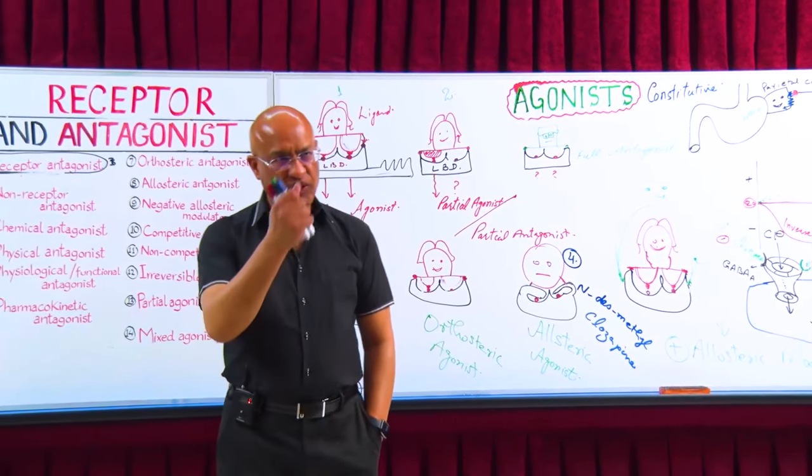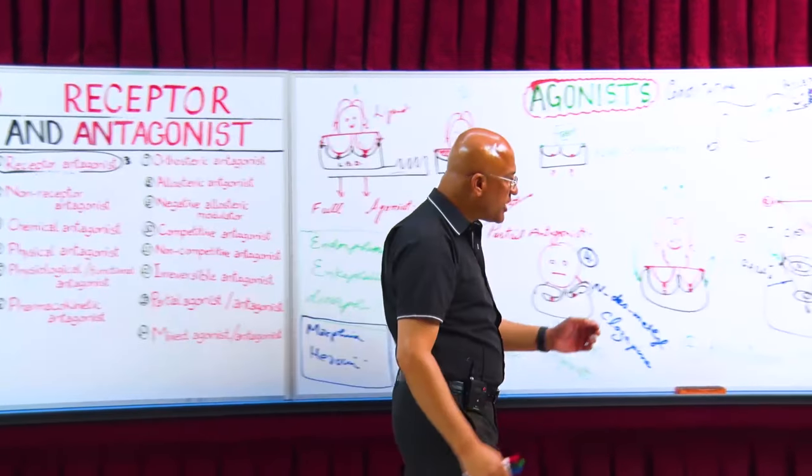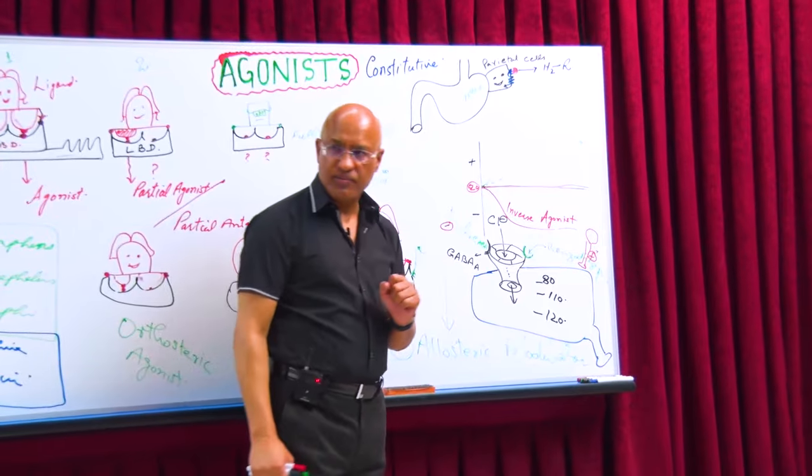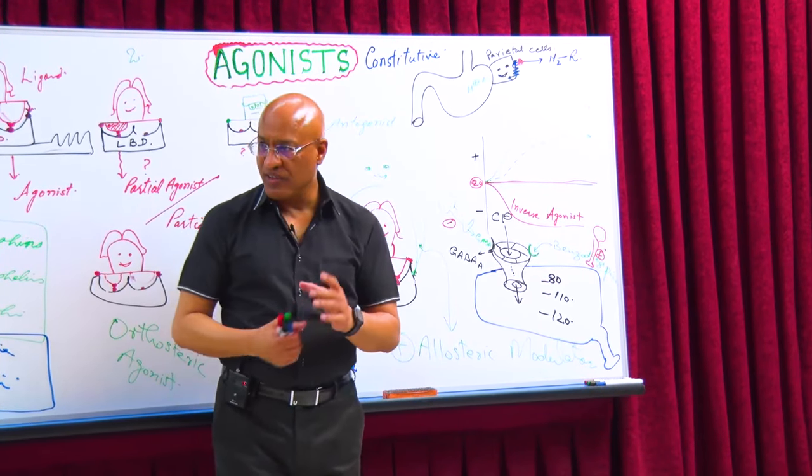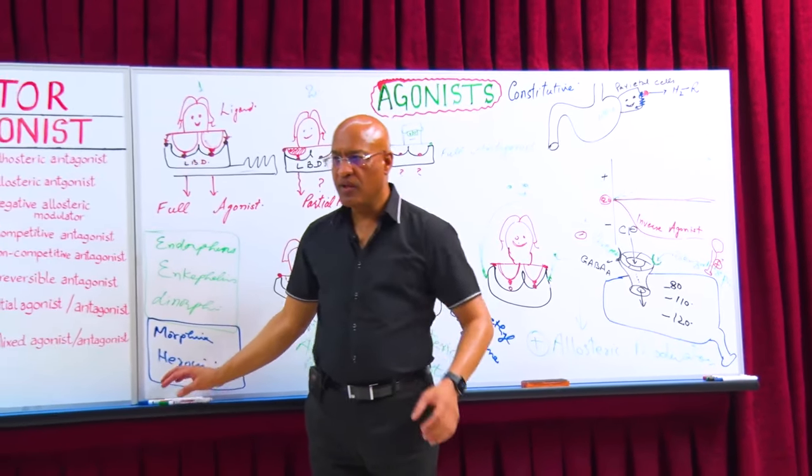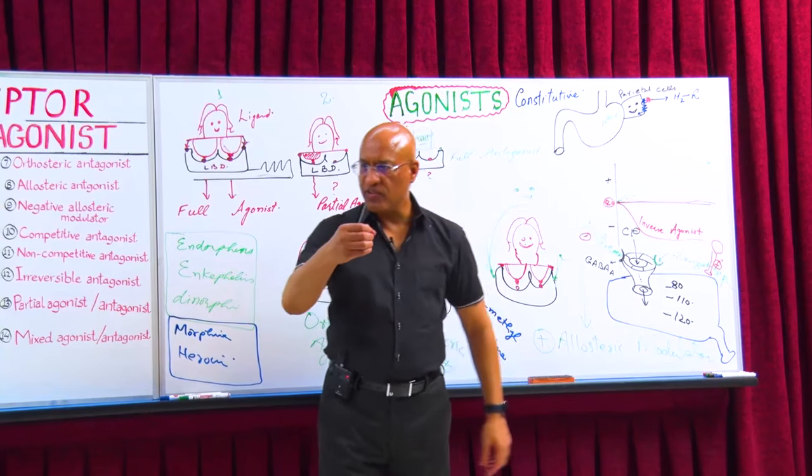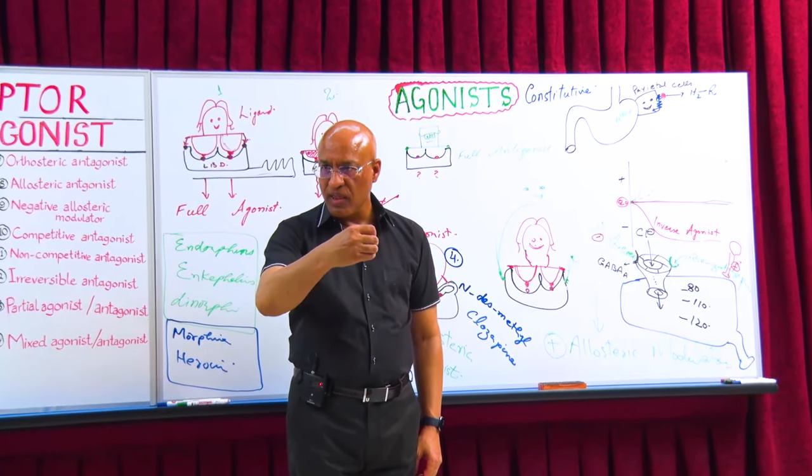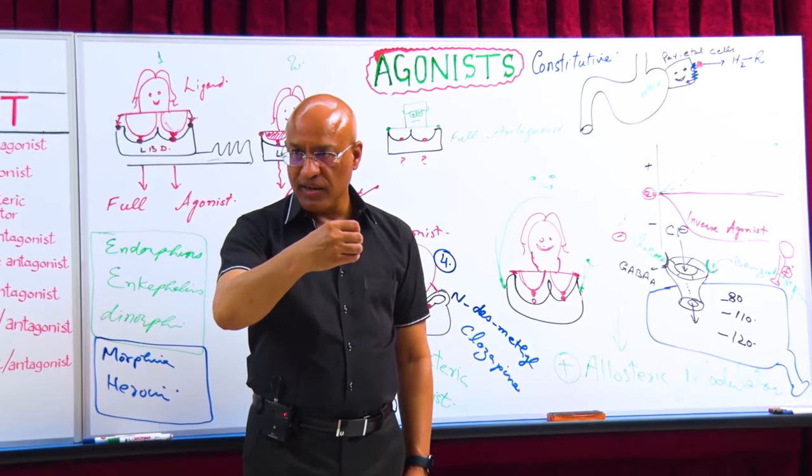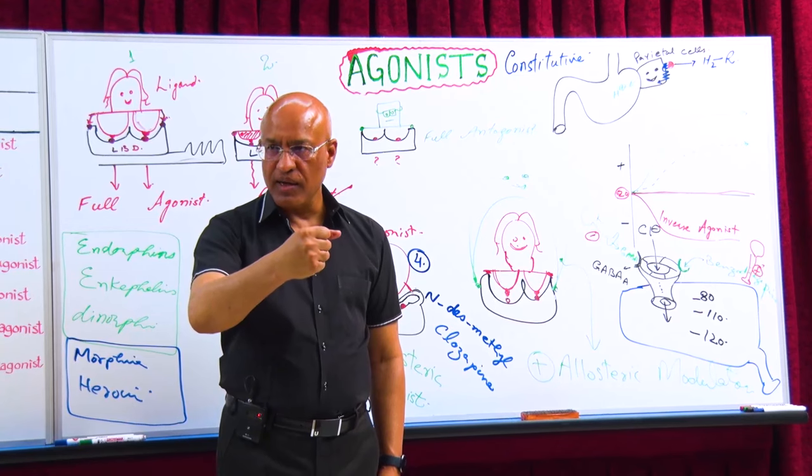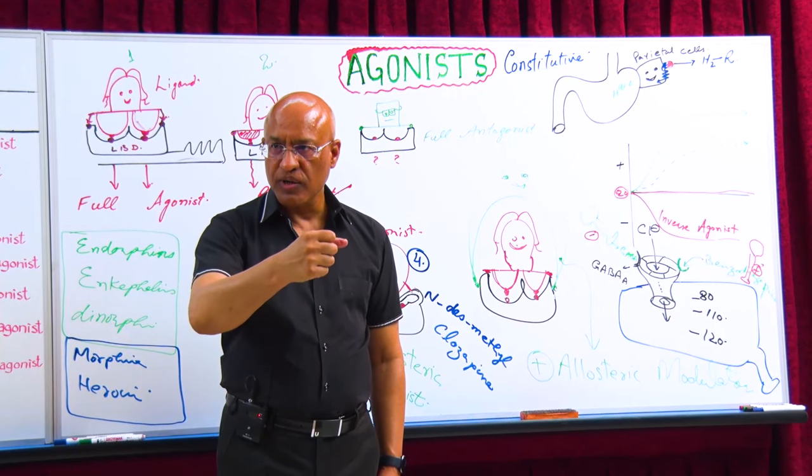Why is it so? Actually, barbiturates also work on the same channel. Now listen, if this is the channel, okay, this is the chloride channel, the GABA-A channel. It means normally it's very slowly opening and closing.